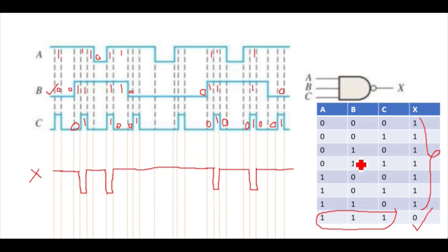So this is the output waveform for X for the three-input NAND gate. As you can see, it's better to design the truth table first and write it beside the circuit — it makes it much easier to draw this kind of output waveform. I hope you got this explanation. If you like it, please like and subscribe to my channel. Thank you.